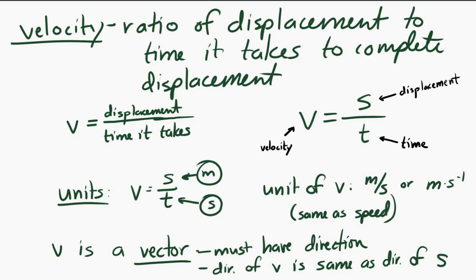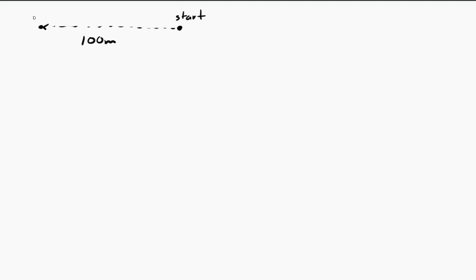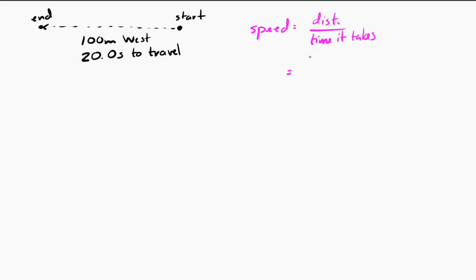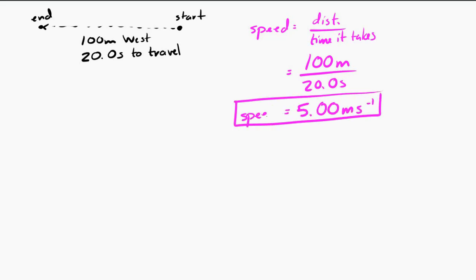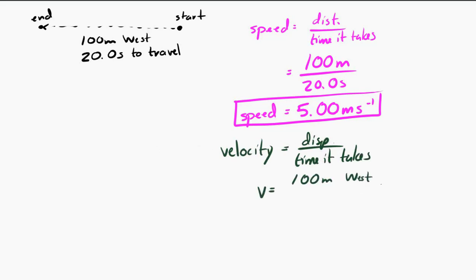Let's do an example. Say you want to go from one class to the next, and to do that you have to travel 100 meters to the west. You're excited to go to class, so you run, and it takes you 20 seconds. Your speed would be the distance traveled divided by the time: 100 meters divided by 20 seconds equals 5 meters per second. Your velocity would be the displacement divided by the time: 100 meters to the west divided by 20 seconds equals 5 meters per second to the west.